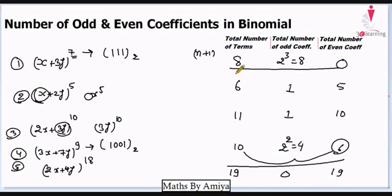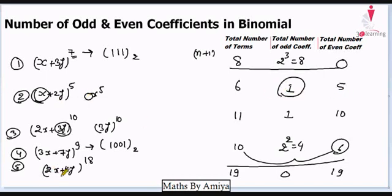So this is the way of finding: total number of terms = n+1; total number of odd coefficients = 2^m where m is the number of 1's in the binary expansion, with the condition that both coefficients must be odd. If one coefficient is odd and the other is even, then total number of odd coefficients is 1 and the rest are even. If both coefficients are even, then total number of odd coefficients is 0 and all are even coefficients.